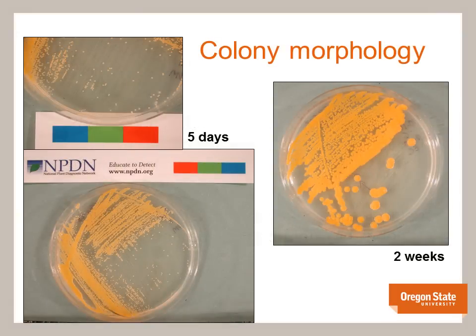Colonies of Rhodococcus fascians are small, dome-shaped, moist looking, and chrome yellow in colour. The cultures on the left are 5 days old while the culture on the right is about 2 weeks old. Both cultures are on D2 medium, which is the nutrient medium semi-selective for Rhodococcus.